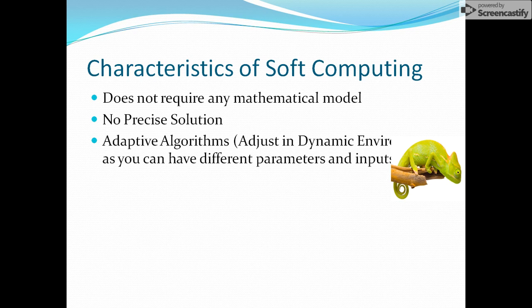The characteristics of soft computing: it does not require any mathematical model, it does not have any precise solution, and most importantly it has adaptive algorithms — meaning they adjust in dynamic environments. You can have different numbers of parameters and inputs. For example, a function with 50 parameters can later work with 40, 30, 10, or 2 parameters — in every situation the algorithm is adaptive.